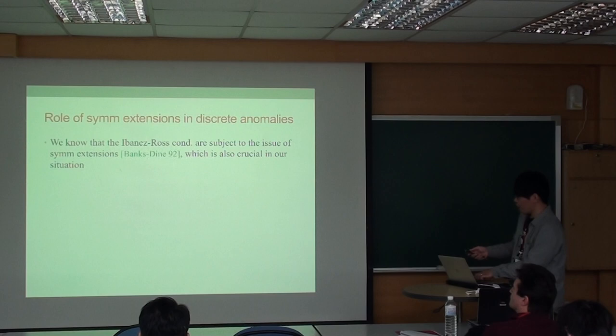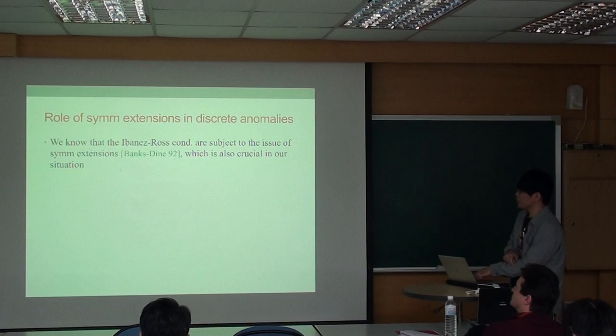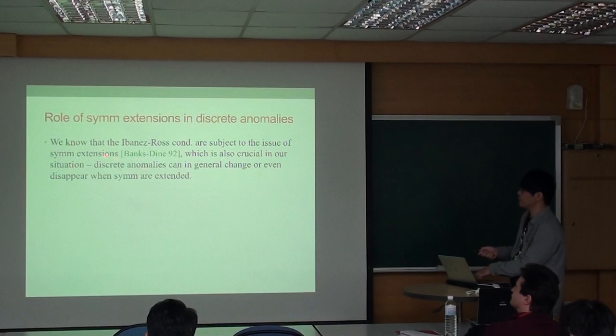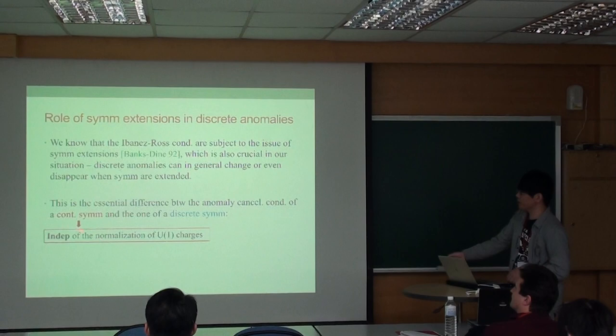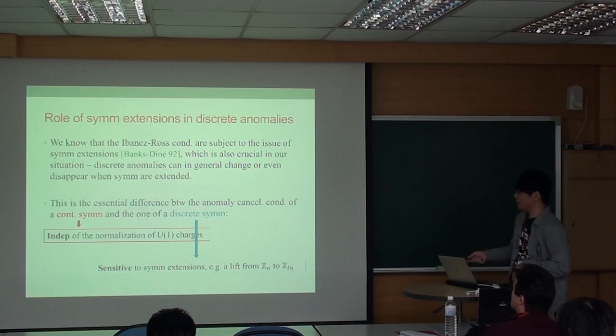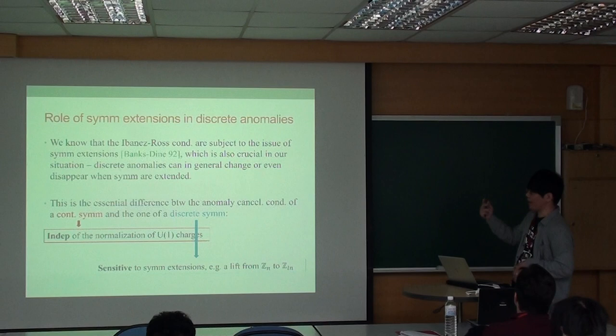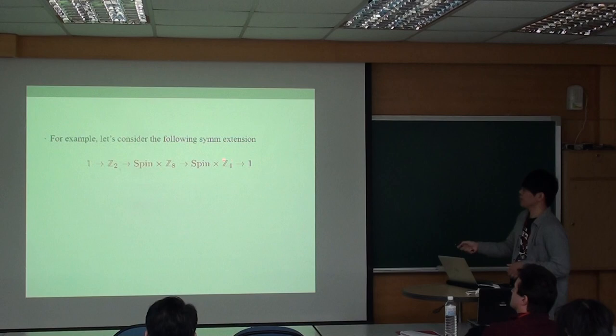Here is the last part of my talk. We know that the Ibáñez-Ross condition is subject to the issue of symmetry extensions, which is also crucial in my situation. That is, discrete anomalies can in general change or even disappear when symmetries are extended. This is the essential difference between anomalies cancellation condition of continuous symmetries and the one of discrete symmetry. While the former is independent of normalization of U(1) charge, the latter is sensitive to symmetry extensions, for example, a lift from ZN to Z(LN) for some integer L.